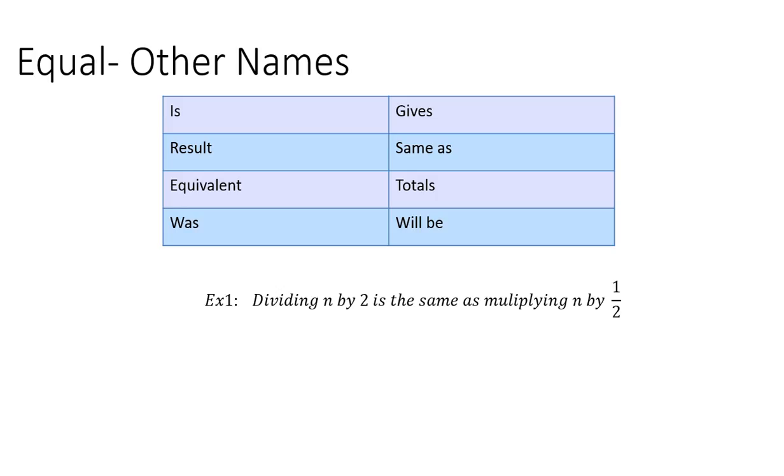So example 1, dividing N by 2 is the same as multiplying N by 1 half. So to represent that, it would be N over 2, because you're going to be dividing, equals N, and then it's multiplying by 1 half. And I use parentheses here to represent multiplication.